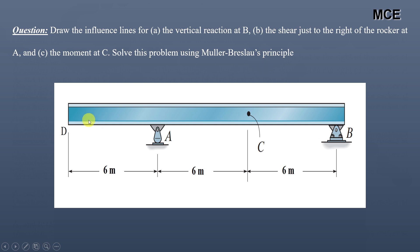This is an overhanging beam of total span 18 meters. There is a rocker joint at A and a pin joint at B.